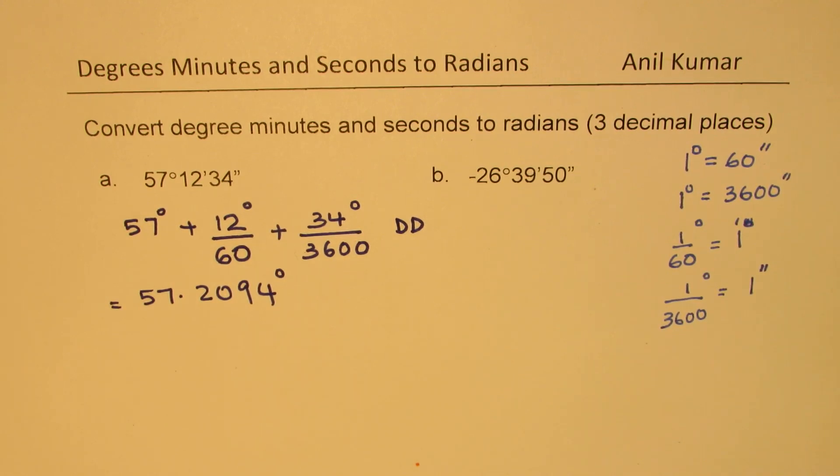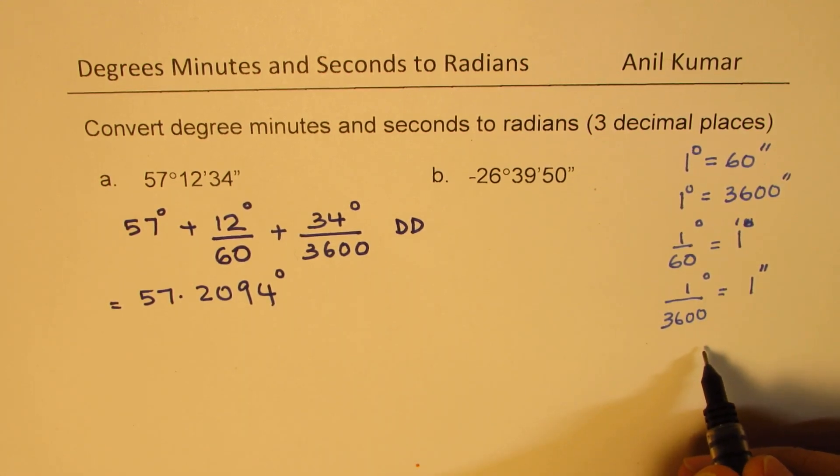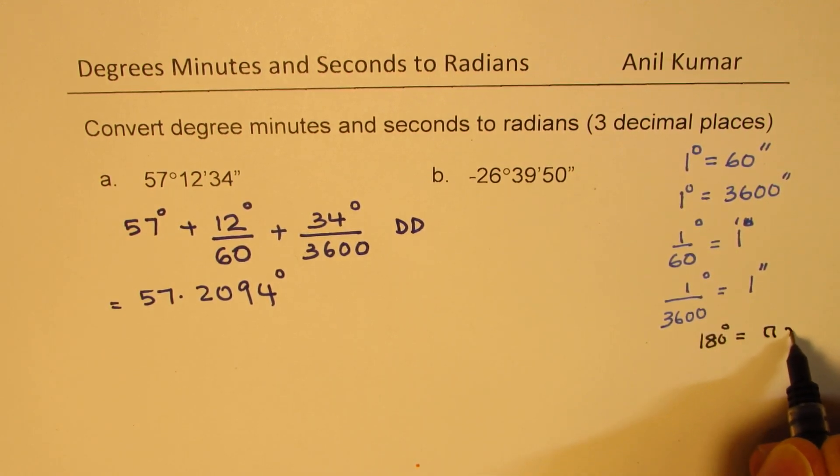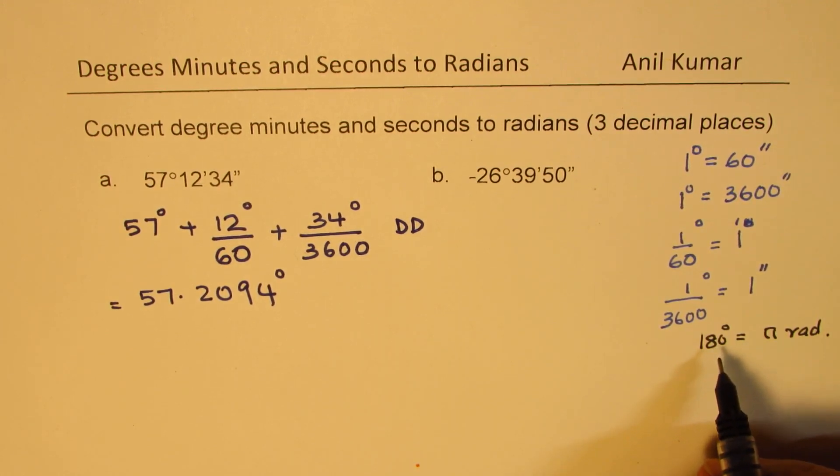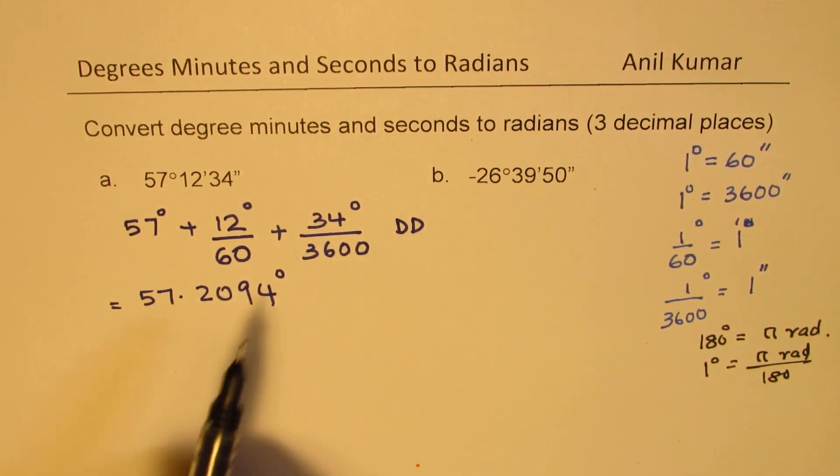Now, from the decimal degrees, we will convert this to radians. So that will be our next step. To convert to radians, we know that the relation basically is 180 degrees equals pi radians. So now, if I need to know how is degree related with radians, then one degree equals pi radians over 180.